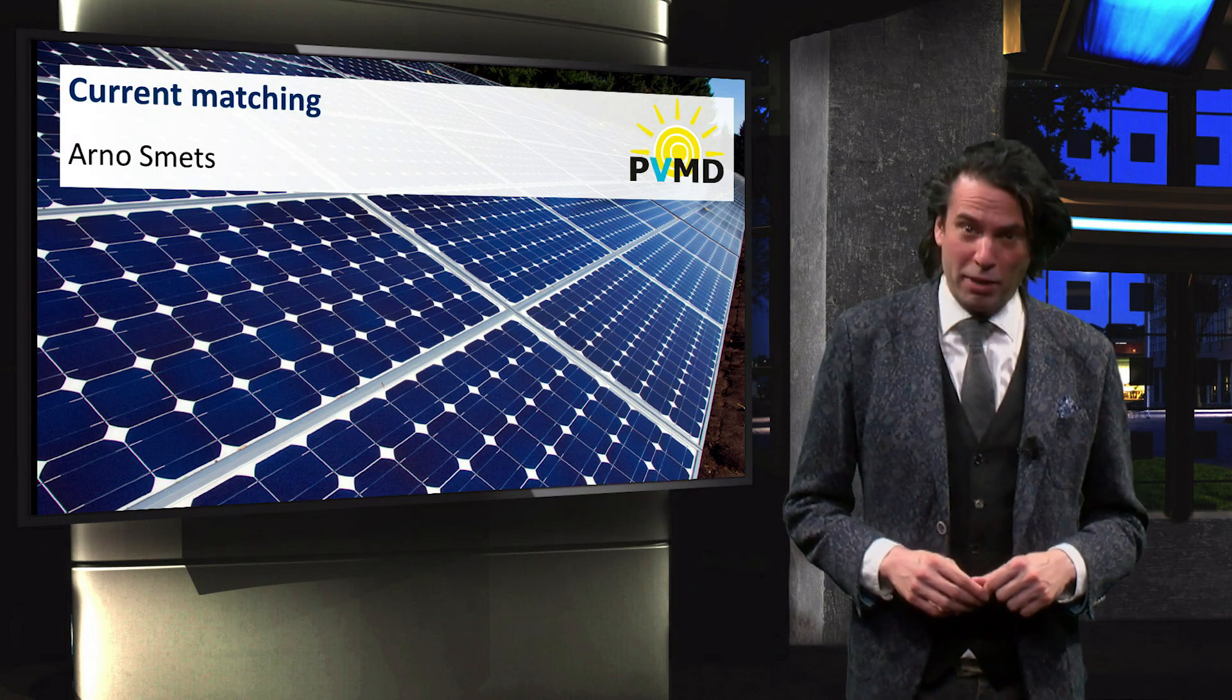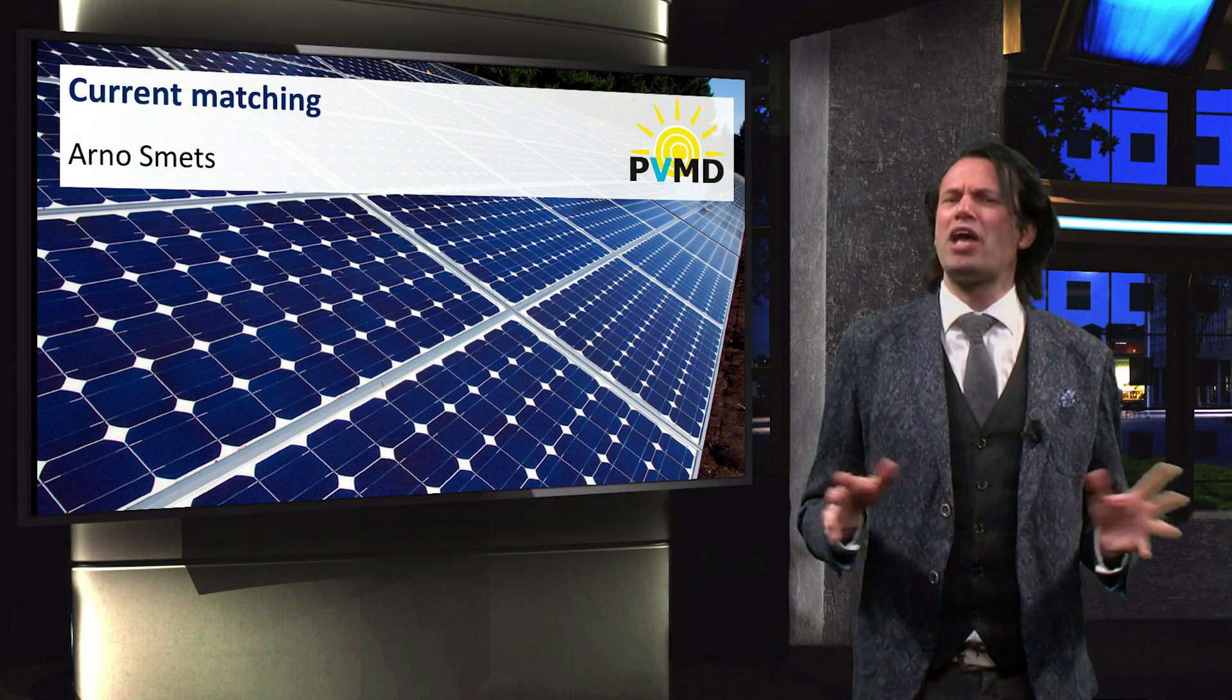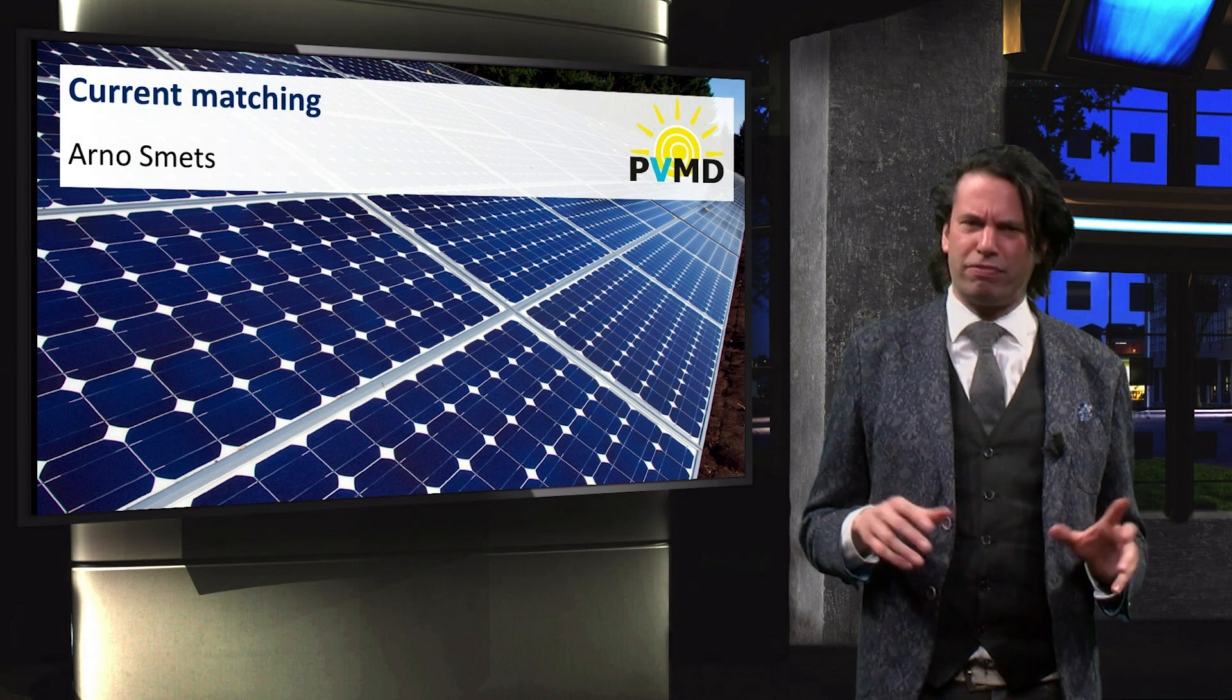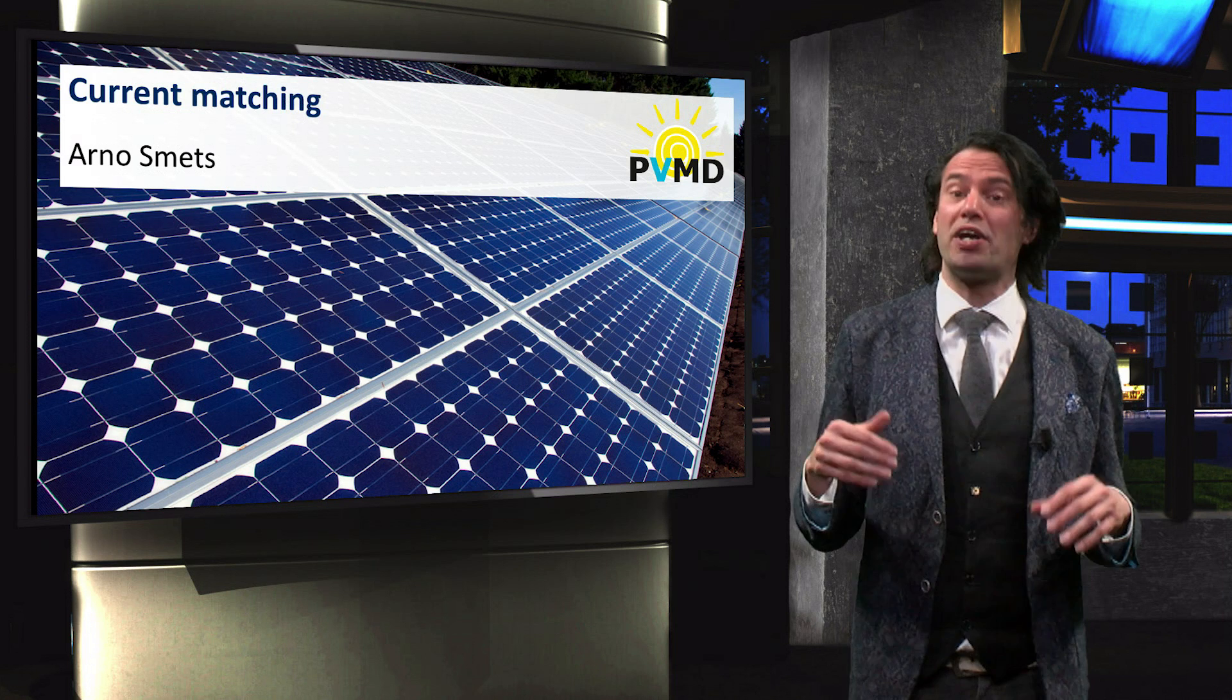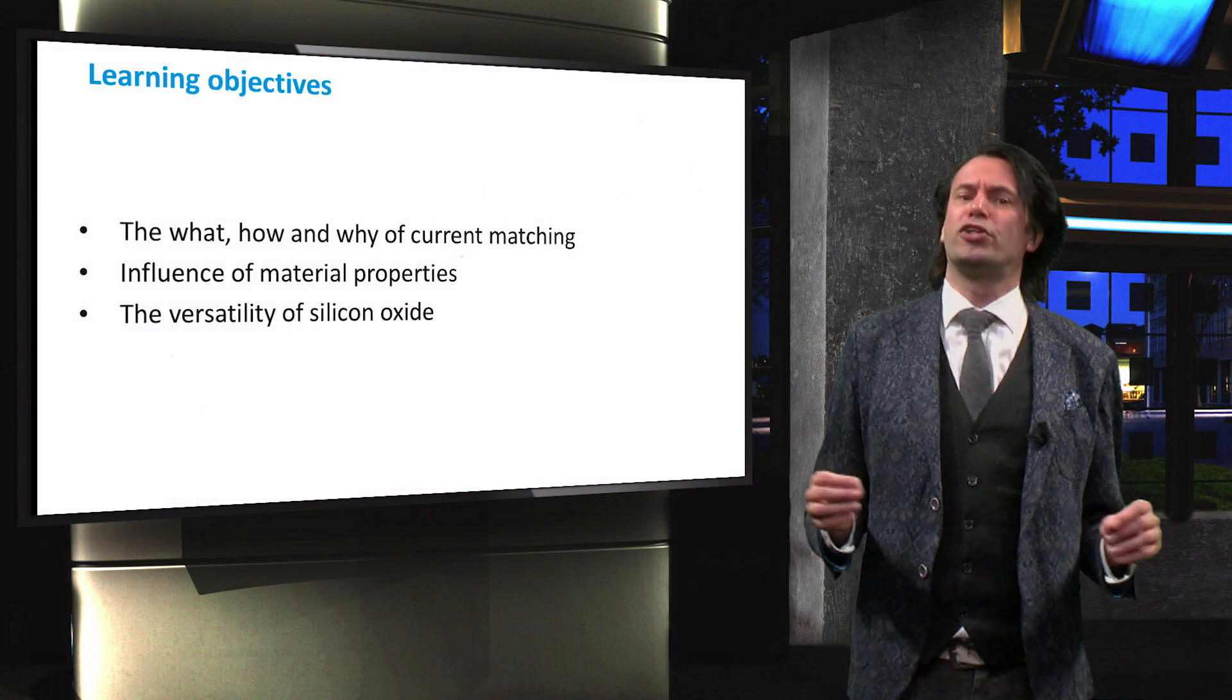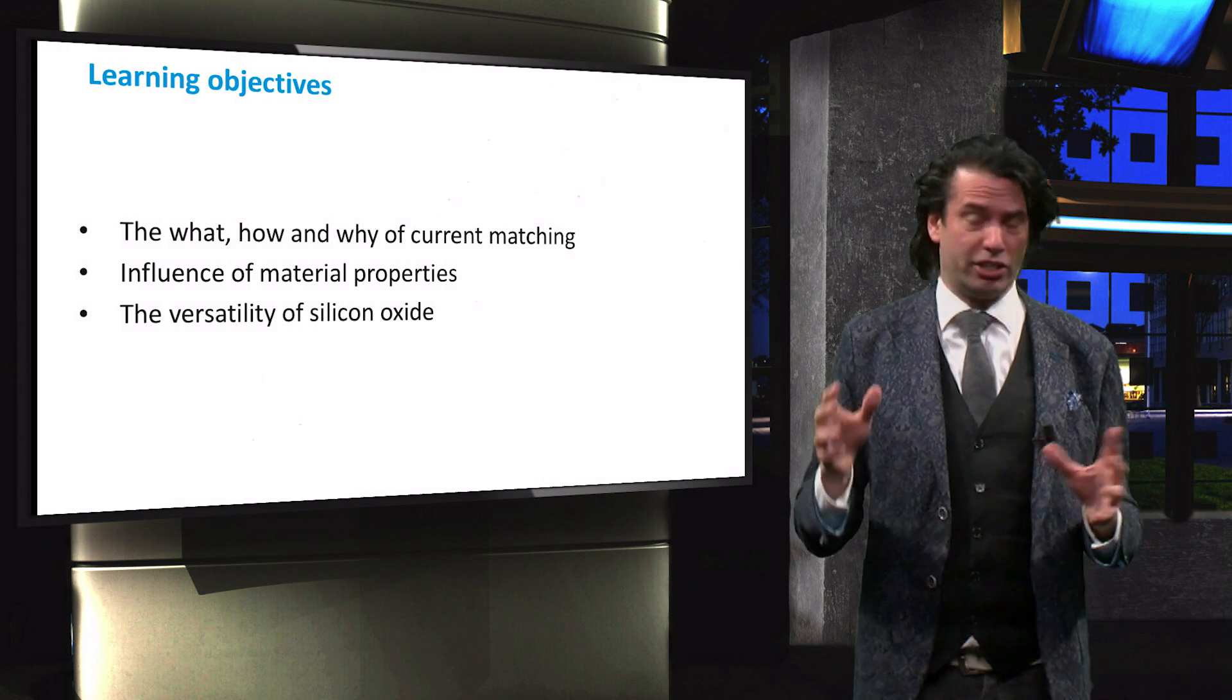In this section we discuss the major challenges in the production of thin-film silicon solar cells. In the previous videos we have discussed the use of surface roughness and the Staebler-Wronski effect, which entails the light-induced degradation that afflicts amorphous silicon. In this video we discuss a major challenge for creating high-efficiency multi-junction cells, namely current matching. The learning objectives for this video are to understand what current matching is, why it is applied and how current matching is achieved.